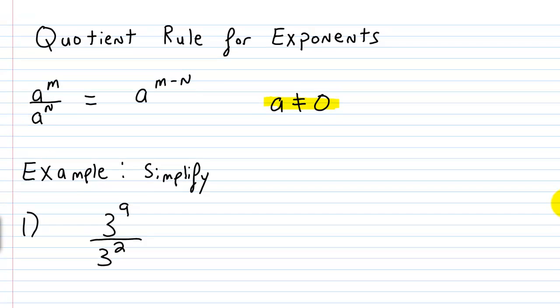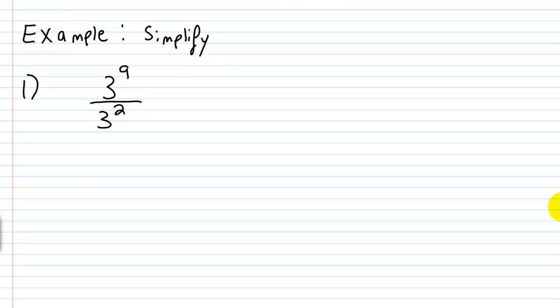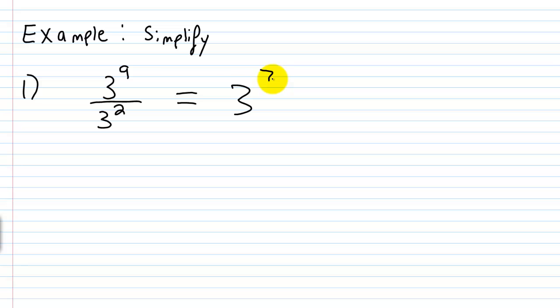For our first example, we're going to simplify 3 to the ninth power over 3 squared. We have the same base — the base is 3. So we keep our base the same and then subtract exponents: 9 minus 2 is 7. So the answer is 3 to the seventh power.